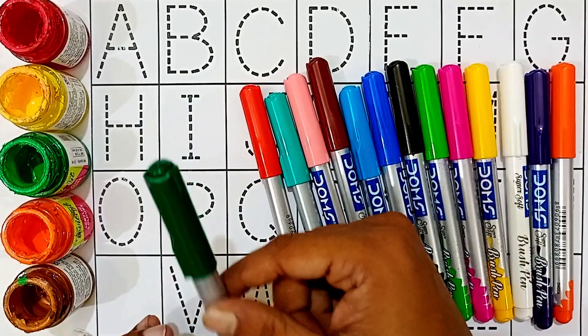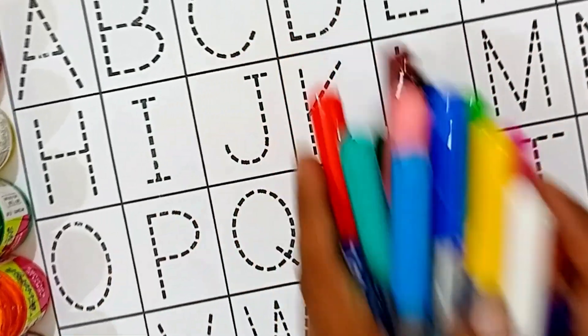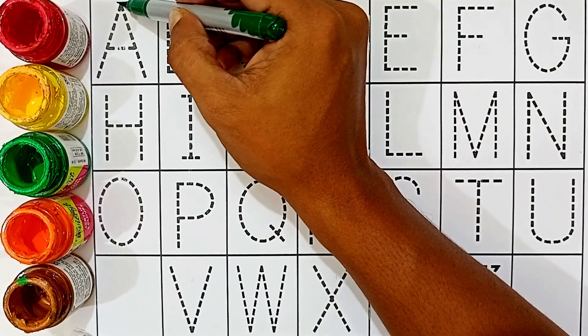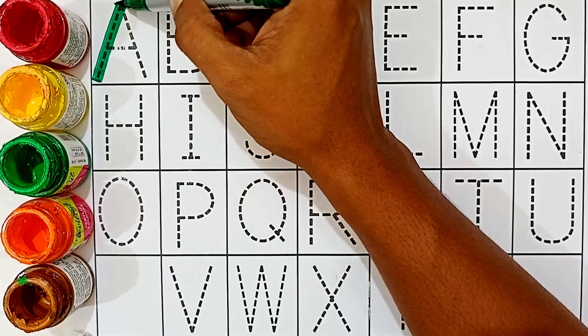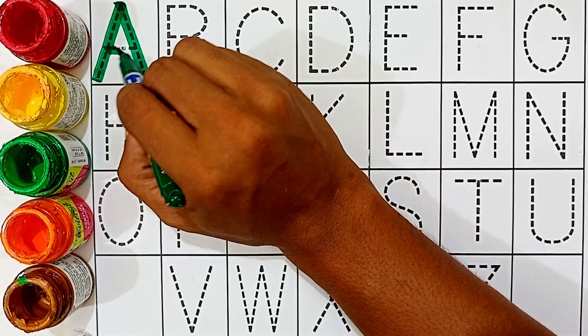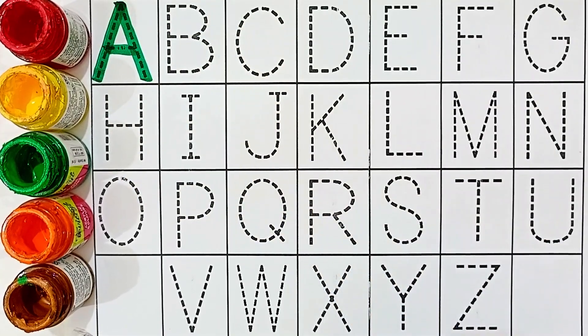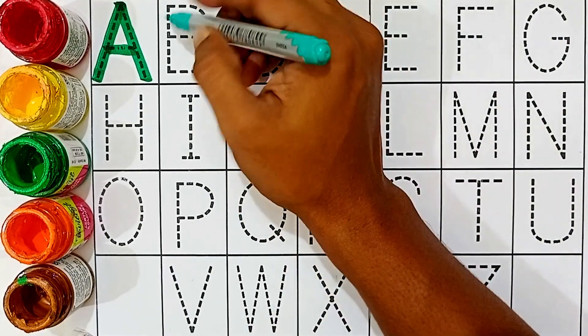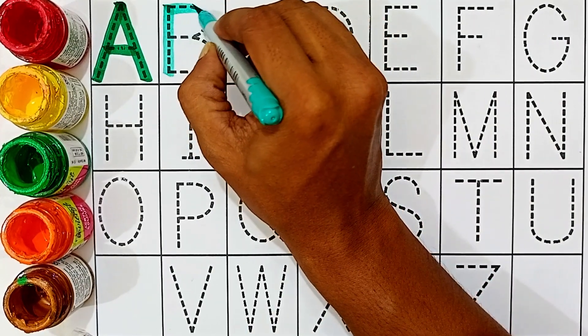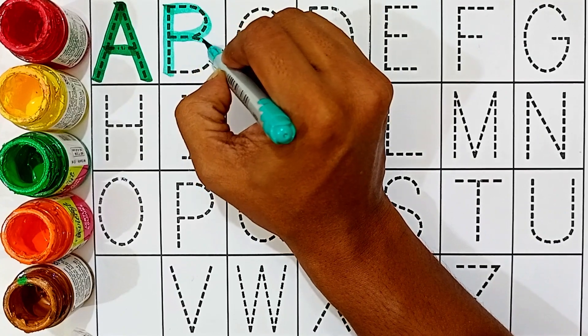Red color, green color. A, green color. A for apple, A for apple. B, sea green color. B for ball.